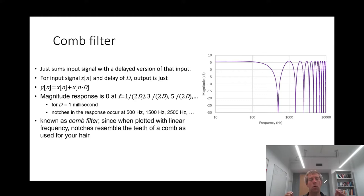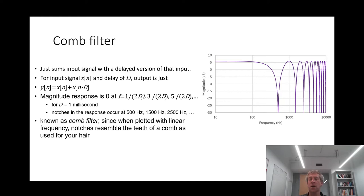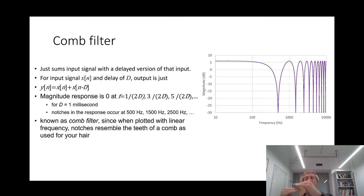Supposing the source is producing a sine wave and you add a delayed version of that sine wave. If the original sine wave and the delayed version are just one period different, then the peaks sum at the peaks and the zero values sum together, so you're just increasing the amplitude of that sine wave. But if it's out of phase — half a period different in time — then the maximum value of the original sine wave will add together with the minimum value of the delayed version and they will cancel out completely.